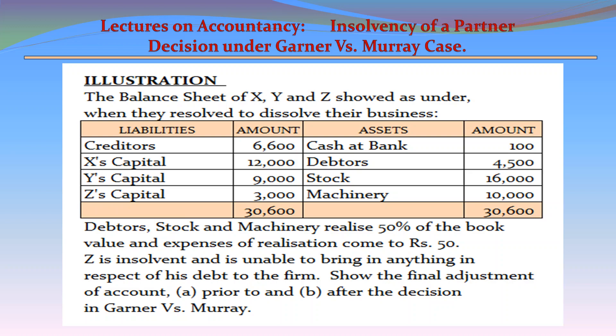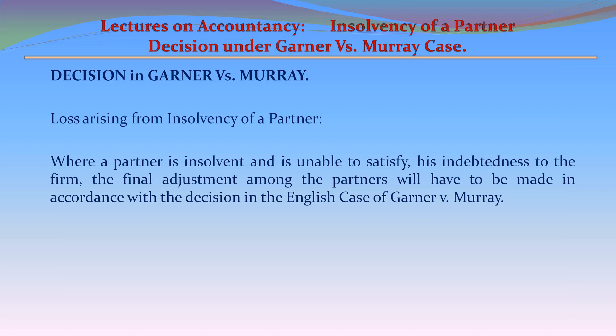Before solving this problem, let us discuss the implications under Garner vs. Murray case and how to deal with each element in the decision. To solve the illustration under two conditions — one, prior to the decision in Garner vs. Murray, and after the decision in Garner vs. Murray case. Decision in Garner vs. Murray: Loss arising from insolvency of a partner.